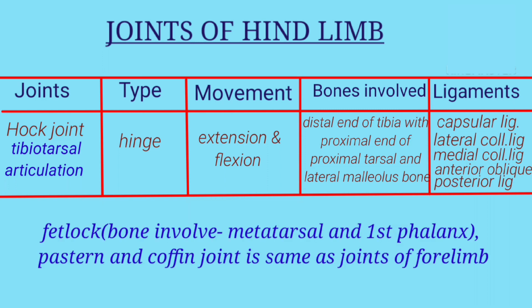The remaining joints — fetlock, pastern, and coffin joint — are the same as the forelimb, except in the fetlock joint the bone involved is metatarsal and first phalanx. Here we conclude the joints of the hind limb. Stay safe and see you in the next video.